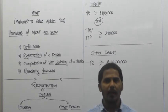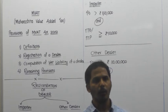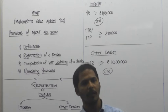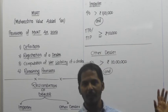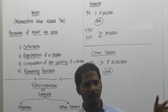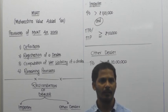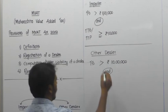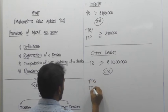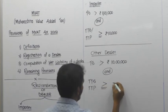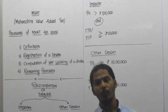If both conditions are satisfied, the importer must compulsorily register and pay tax under MVAT Act 2002. For Other Dealer: first limit — Total Sales must be greater than rupees 10 lakhs (compared to 1 lakh for importer). Second limit — Total Taxable Sales or Total Taxable Purchase must be greater than or equal to rupees 10,000 — same as for importer. So the difference is only in the first condition: 1 lakh for importer, 10 lakh for other dealer.